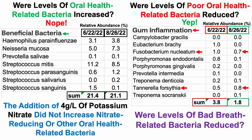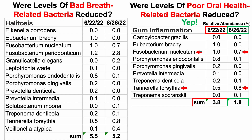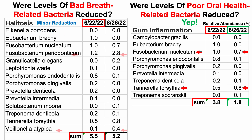What about levels of bad breath-related bacteria? Bacteria related to halitosis were 5.5% for the first test, and essentially the same — at best a minor reduction to 5.2% — for the second test. Once again, Fusobacterium nucleatum and Tannerella forsythia account for 1.5% of that 5.2%, so reducing those two bacteria would make the biggest dent in bad breath-related bacteria.